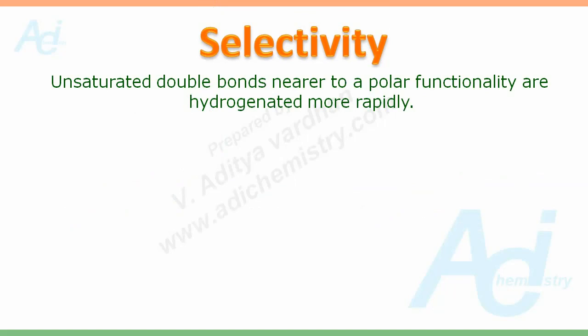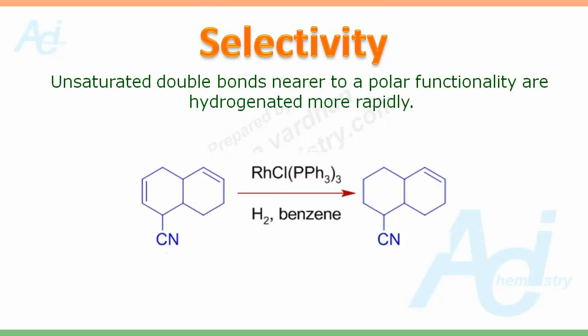The unsaturated double bonds nearer to a polar functionality are hydrogenated more rapidly. For example, in this case, the double bond which is in conjugation with the cyanide group is selectively hydrogenated.